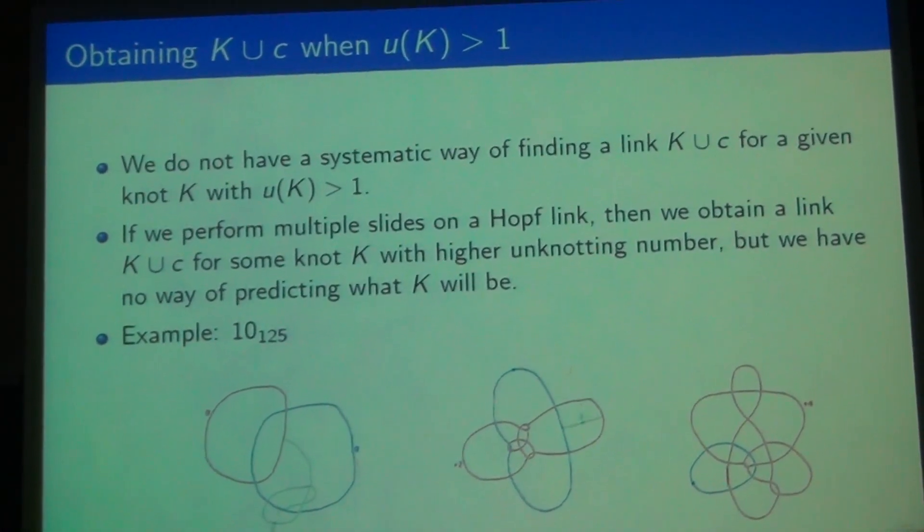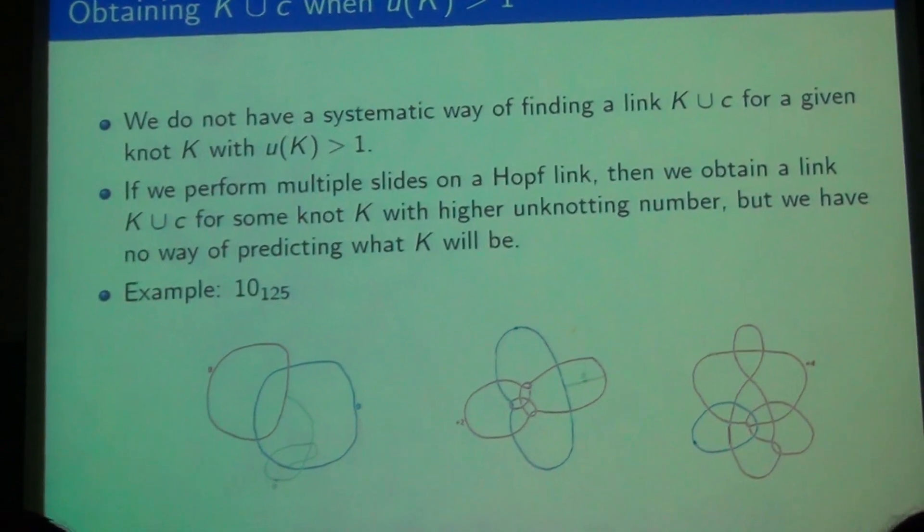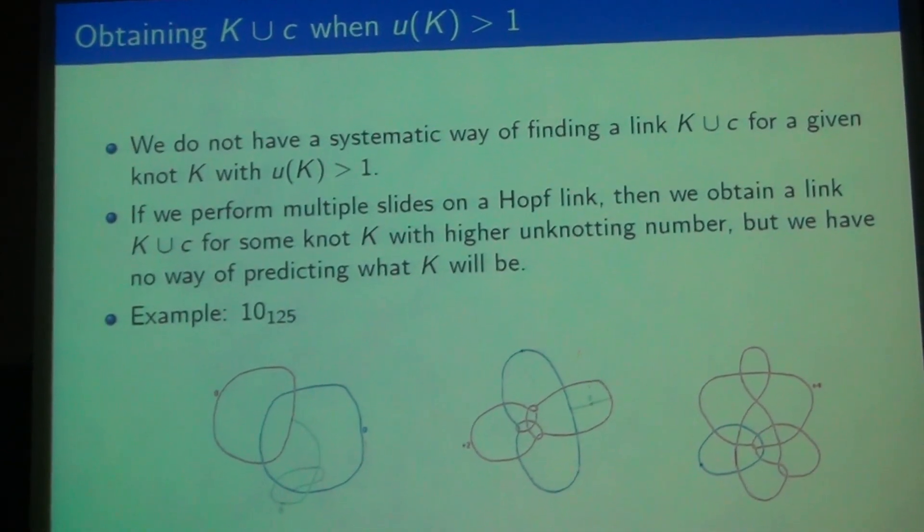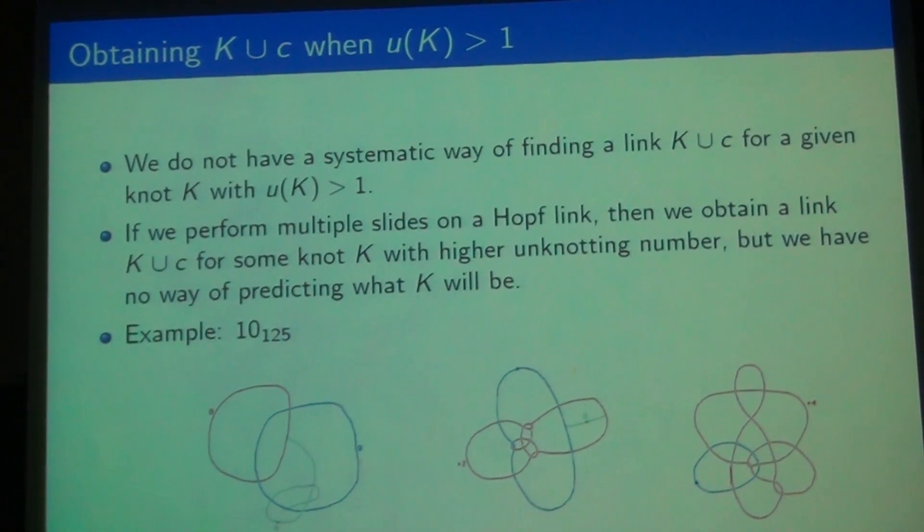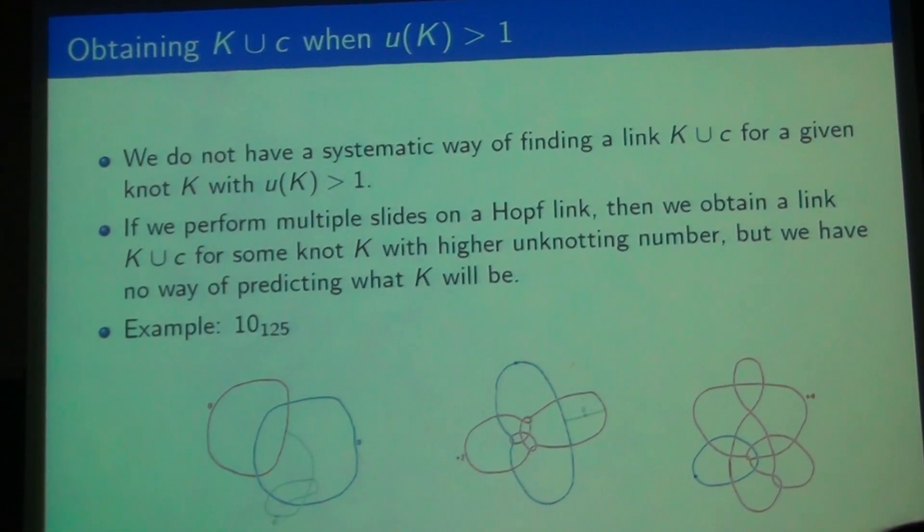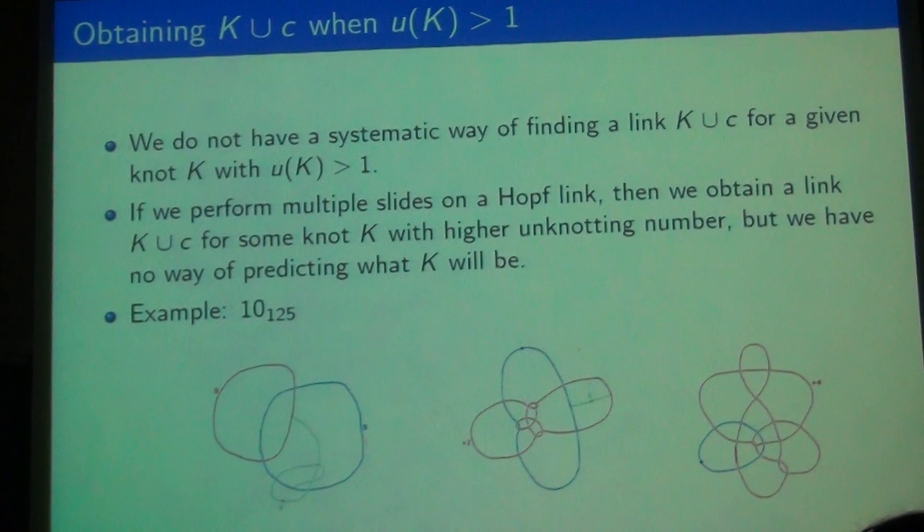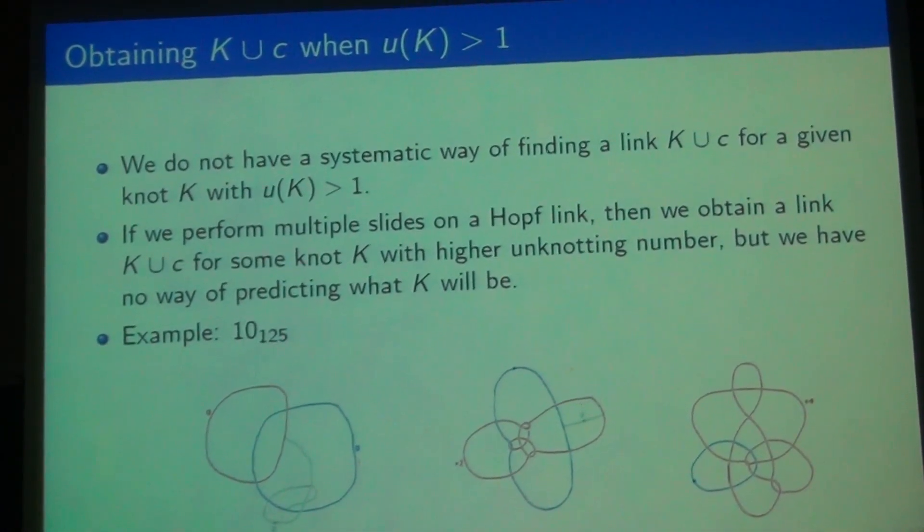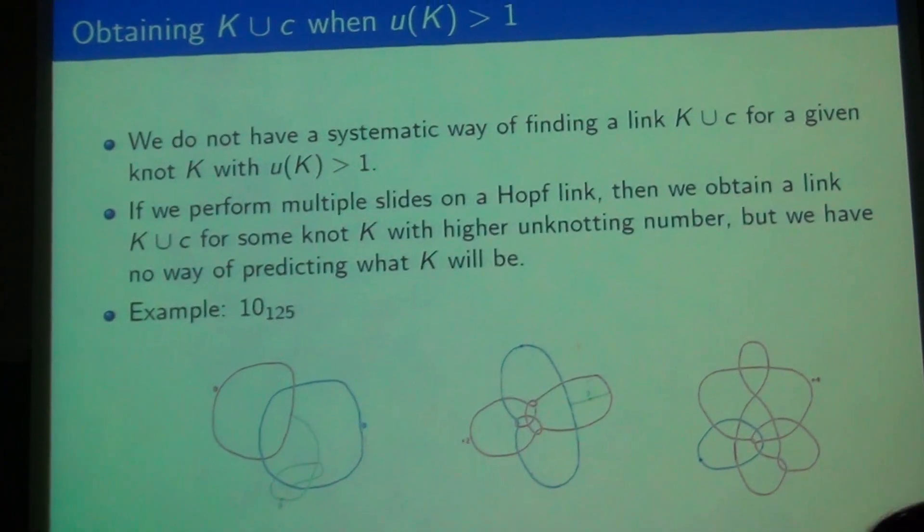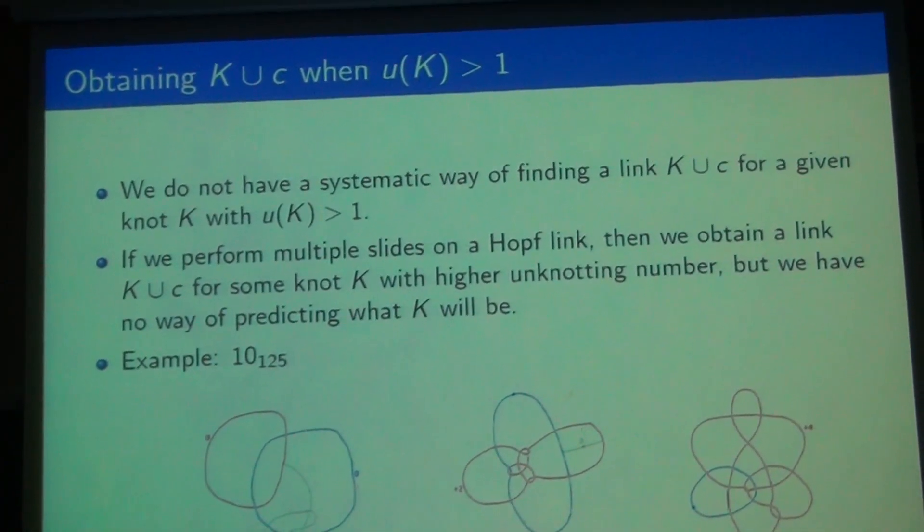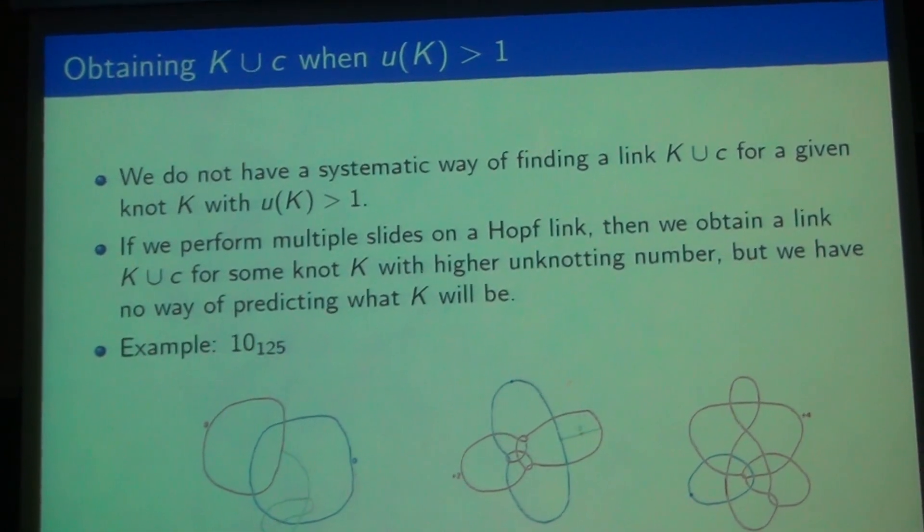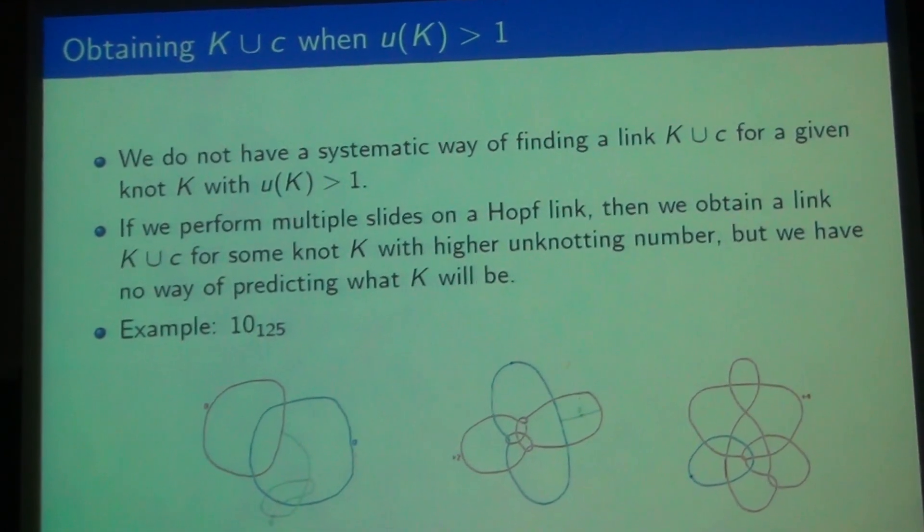When K has unknotting number greater than one, we don't actually have a systematic way of getting these links. What we can do is produce some links K union C where K is some knot with a higher unknotting number, we just don't know what it's going to be in advance. So in this example, we were able to obtain 10₁₂₅, which has unknotting number two, by doing two handle slides on a hoplink. In general, if you do n slides on a hoplink, you can get a knot with unknotting number n. And the diagram on the right is the link K union C, so we can use that to find other knots with the same surgery as 10₁₂₅.